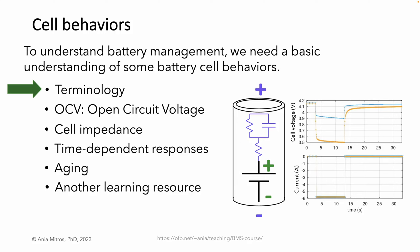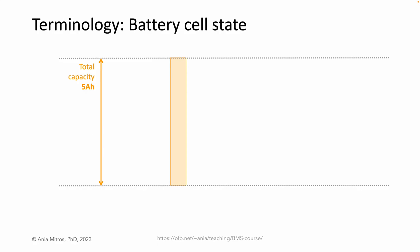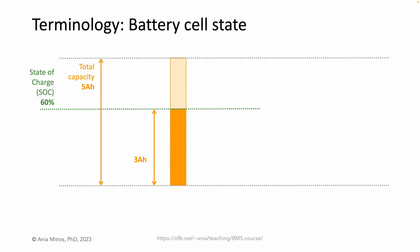Let's start with terminology. Imagine a cell with a 5 amp hour total capacity — that means it can store 5 amp hours of charge. Imagine we charge it with 3 amp hours. We've put in 60% as much charge as it can hold. Its state of charge, or SOC, is now 60%.